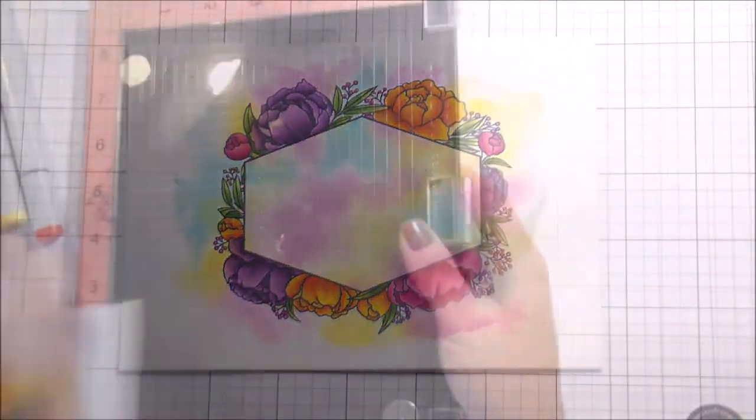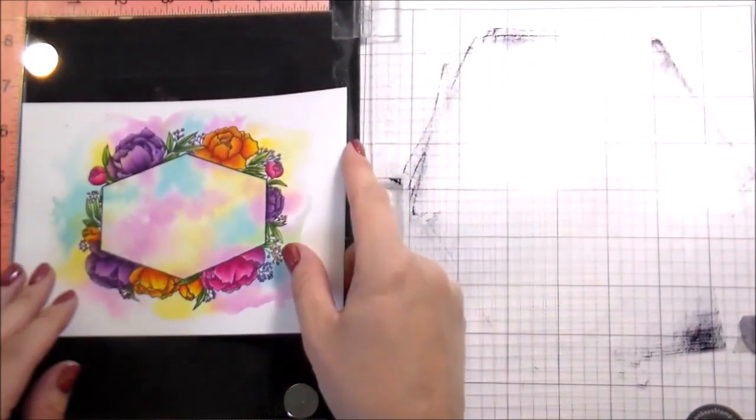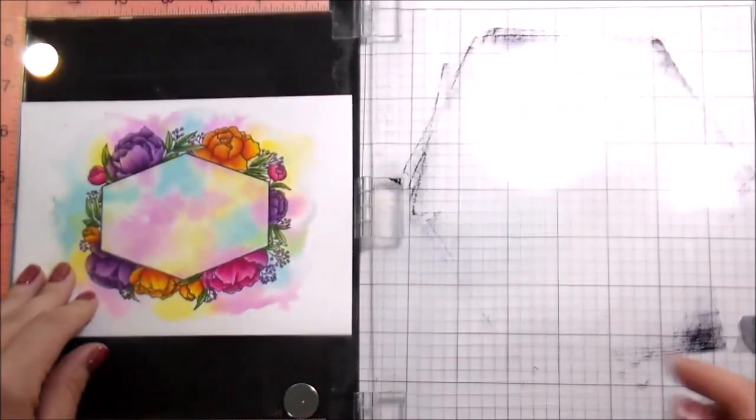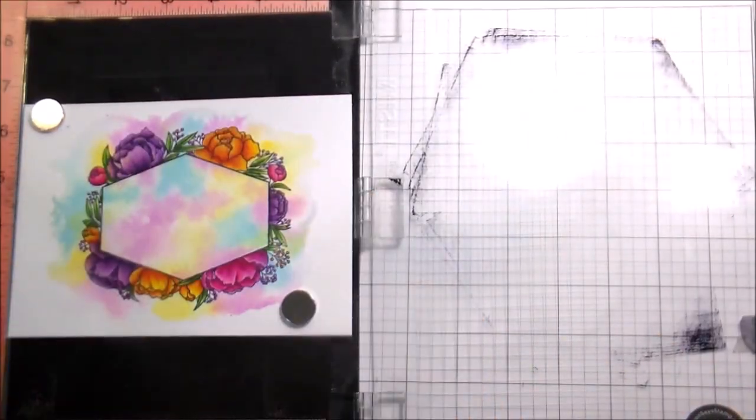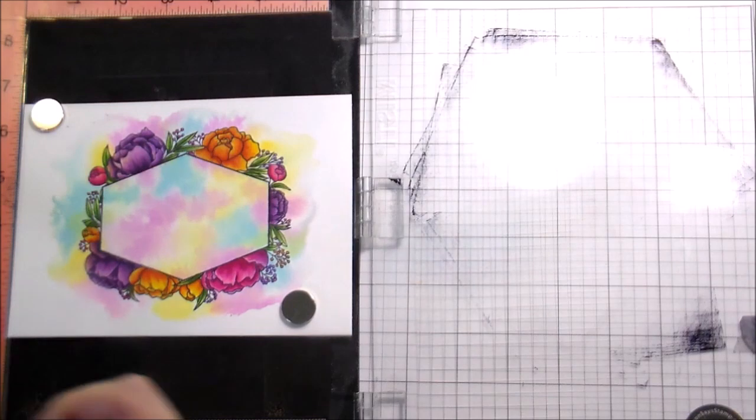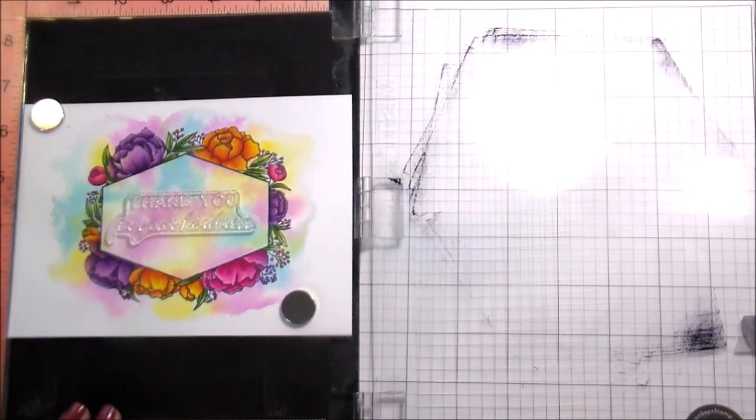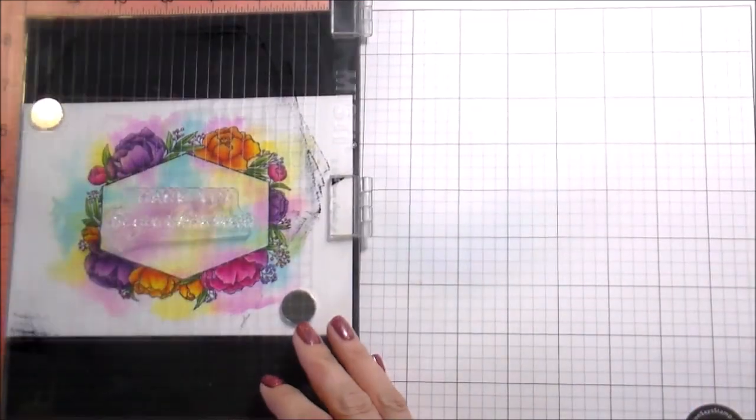So here all of the coloring is done. I'm going to go ahead and stamp my sentiment which is part of the same set. It's made to fit into this cute little geometric shape. I totally love this stamp set. I think it's super pretty. But you know I'm a sucker for florals.